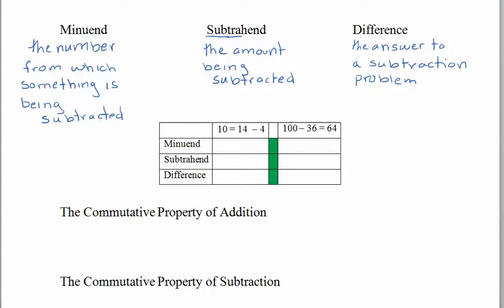Pause the recording and identify the different parts of the subtraction problems in the table. The minuend is the number from which something is being subtracted. In 10 = 14 − 4, since 4 is being subtracted from 14, the minuend is 14, the subtrahend is 4, and the difference is 10. On the other problem, the difference is 64, the subtrahend is 36, and the minuend is 100.